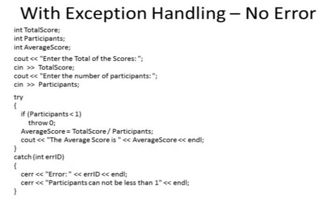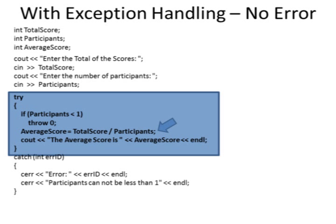Here is a program implemented with exception handling. This time, the divide by zero code is placed inside of a try block. Before we do the division, we are going to test to see if the denominator is zero. If the denominator would be zero, we'll throw an error. And we can give an error identification — this time I just made up a number of zero.